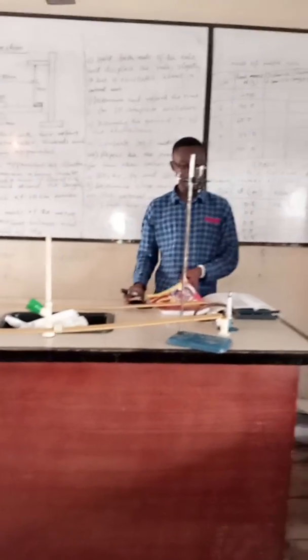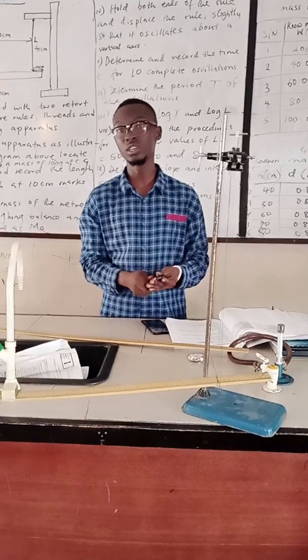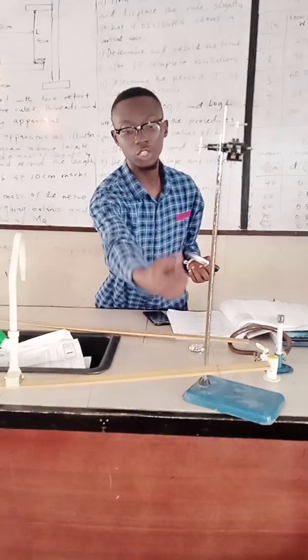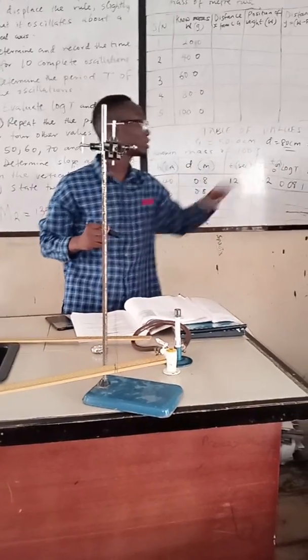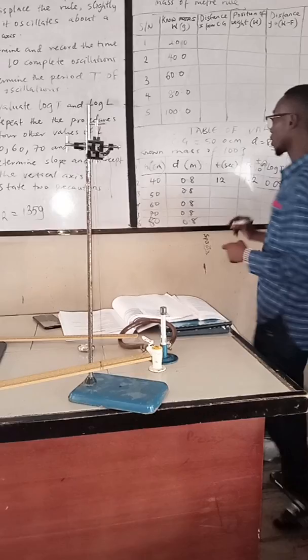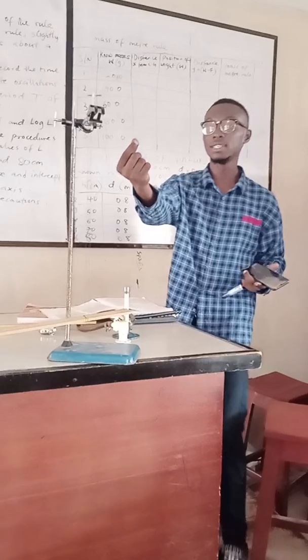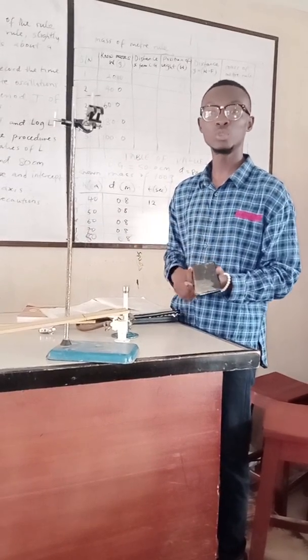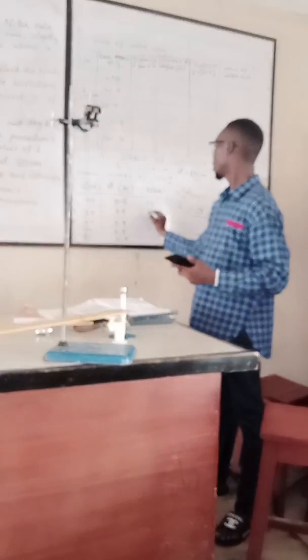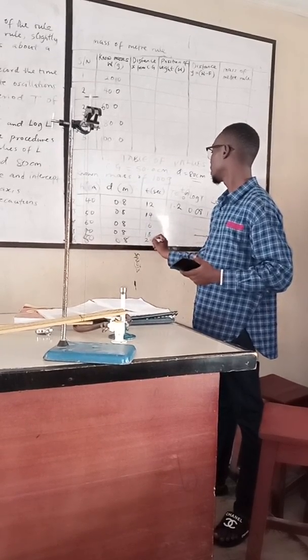For our values, for the sake of time, we are not going to be repeating the procedure, the practicals again. What you are going to do is to make sure that h is 50 cm and you are going to get your values for the t and the big T and log T and log h. For 50 cm, we are going to obtain t to be 14, for 60 cm it's 16, for 70 cm it's 18, and for 80 cm it's 20.